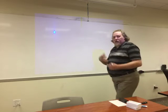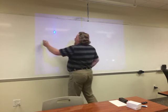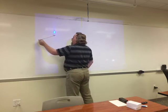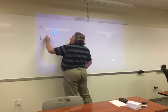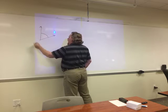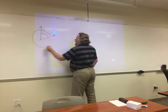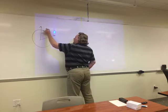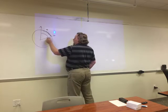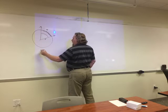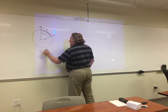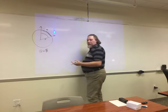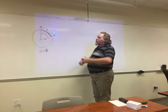Today we're going to talk more about angles. Remember last time we talked about angles, we came up with this formula: if you've got some angle, you can draw any size circle around it, find the length of the intercepted arc, find the length of the radius, and the measure of the angle is the arc length over the radius.